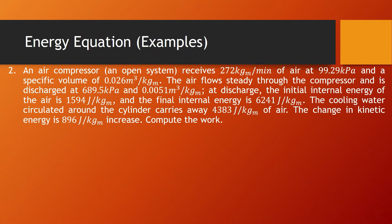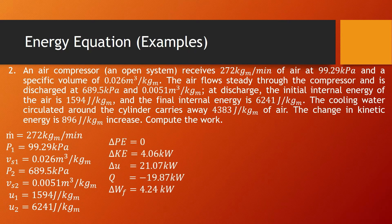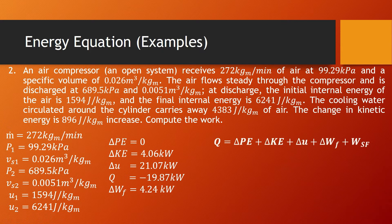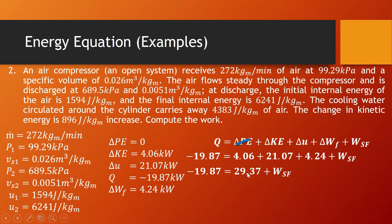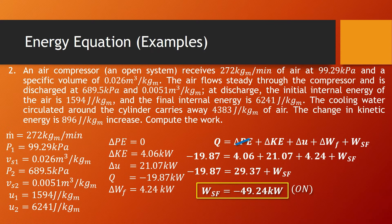For the second example, also a continuation from our previous video, these are the given and computed values: the change in PE is zero, the change in kinetic energy is 4.06 kilowatts, the change in internal energy is 21.07 kilowatts, the heat is negative 19.87 kilowatts, and the change in flow work is 4.24 kilowatts. Using the same equation: negative 19.87 equals 4.06 plus 21.07 plus 4.24 plus the steady flow work. These values sum to 29.37, so our steady flow work is equal to negative 49.24 kilowatts. This means the work is done on the system since it is negative.